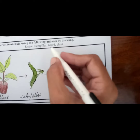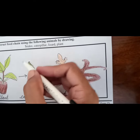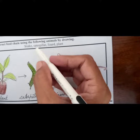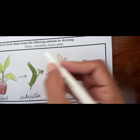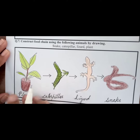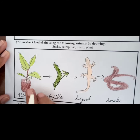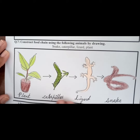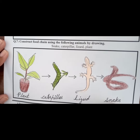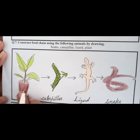A food chain is basically a linear network in which one organism is eaten by the other in a sequence. Here I have drawn: first the plant, then the caterpillar, after that the lizard, and at the last we have the snake.